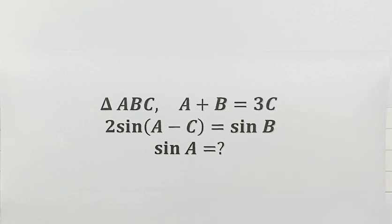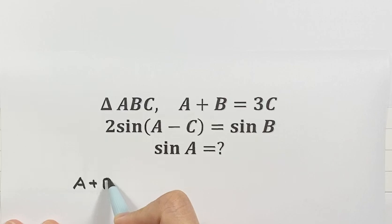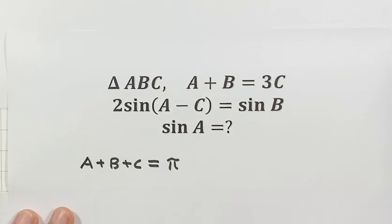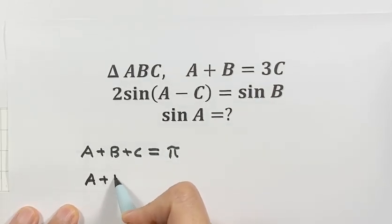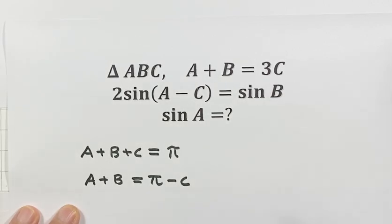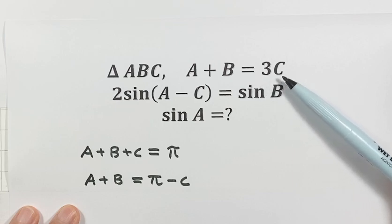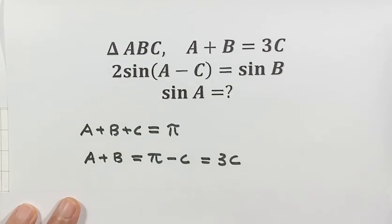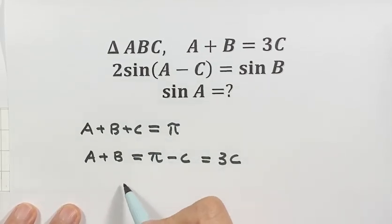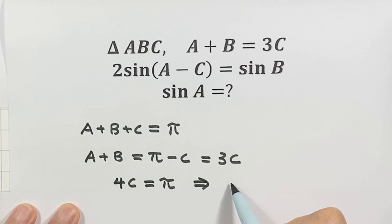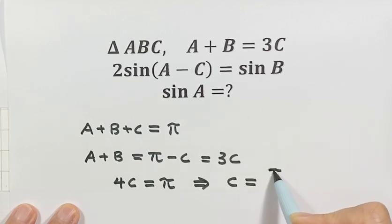Starting from the first condition: the sum of the three angles A plus B plus C equals 180 degrees, which is π. So A plus B equals π minus C. But from the first condition, A plus B equals 3C. Therefore π minus C equals 3C, which gives us 4C equals π, so C equals π over 4.